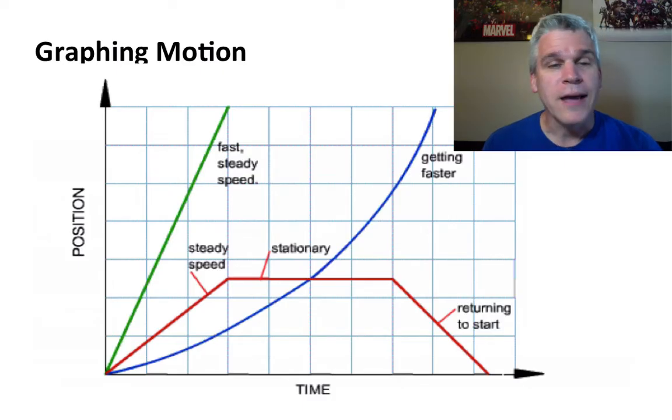Whereas with the red line, the person was walking in one direction, they stopped, and then they went back to the other direction.